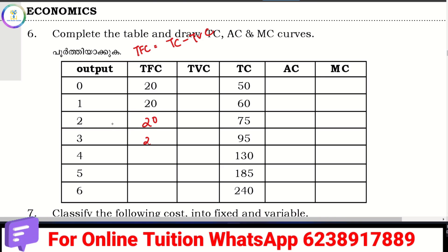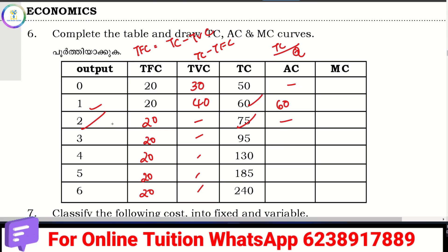If TFC is 20, then TC values change accordingly: if TC is 30, then 40, and so on. We have TC, then we have AC. The equation is TC divided by quantity. 60 divided by 1 is 60; 75 divided by 2. For MC: 60 minus 50 is 10; 75 minus 60 is 15; 95 minus 75 gives us MC.